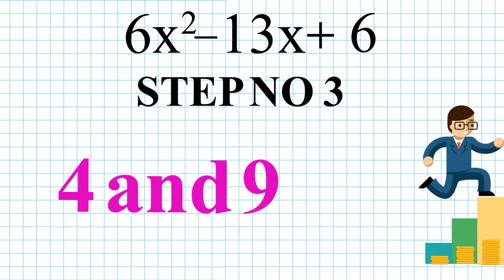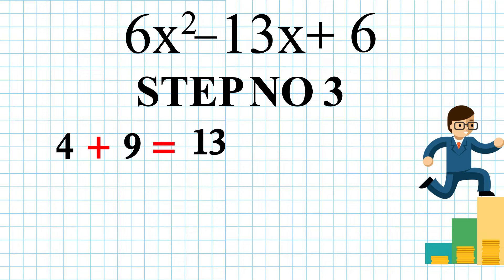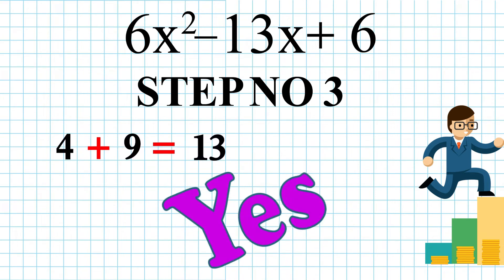The last pair, 4 and 9. By adding them, we get 13. Yes, this is the pair which was needed to factorize the middle term.